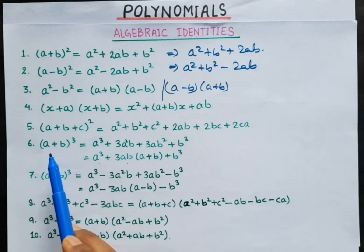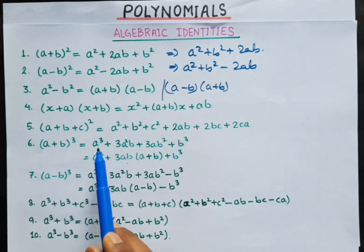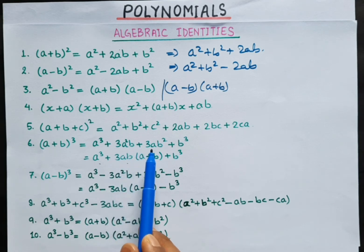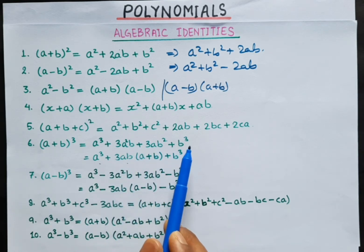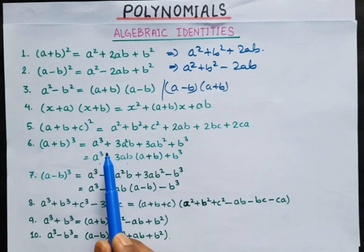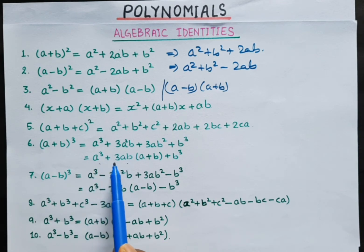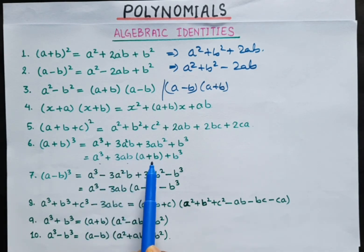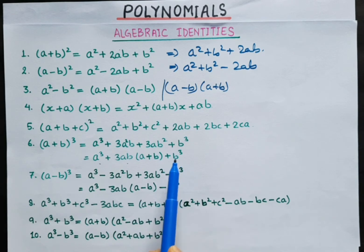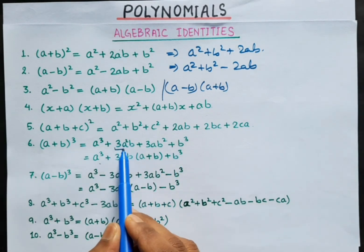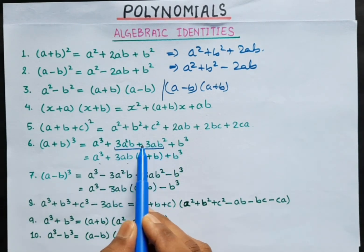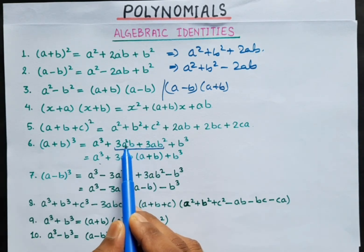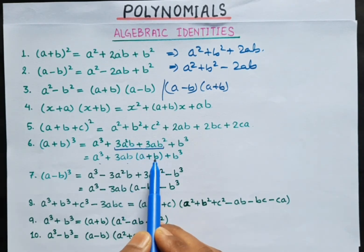Now, identity 6 is (a + b) whole cube, equal to a cubed plus 3a squared b plus 3ab squared plus b cubed. And the second form is: (a + b)³ equals (a + b)³ plus 3ab(a + b).